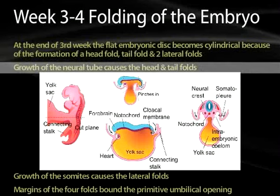It's the prolific growth of the neural tube that starts forcing the head and tail folds in the rostral and caudal plane. Looking at the first image of the yolk sac and connecting stalk in the cut plane, we need to get the two-dimensional embryo into a three-dimensional view. We'll look first at a sagittal section where we can see the forebrain and notochord on the dorsal aspect, and the cloacal and oropharyngeal membranes on the cranial and caudal ends.